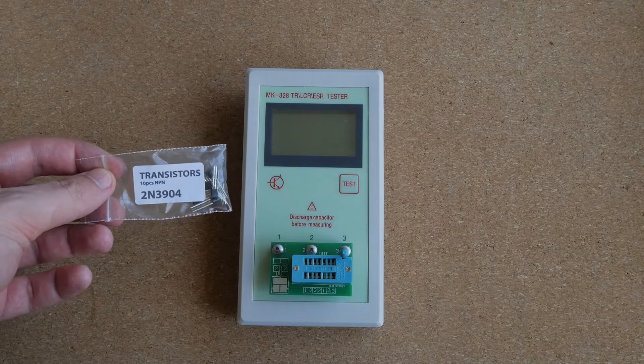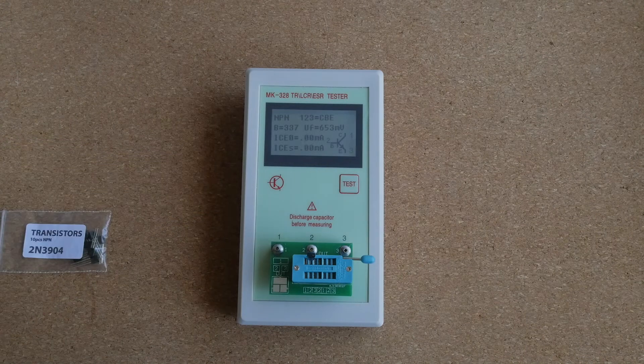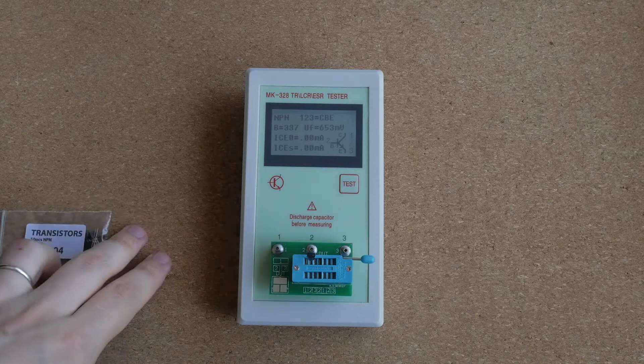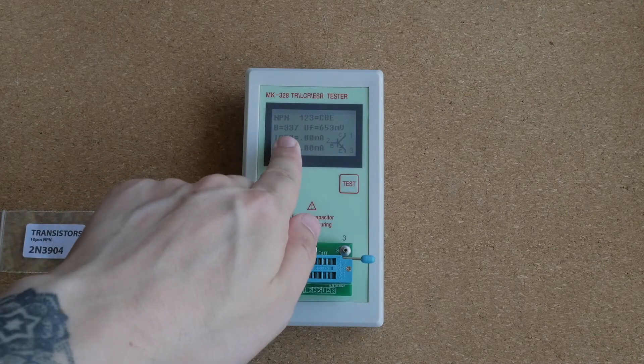This is a 2N3904. As you can see it correctly detected the pinout. It also shows that our DC current gain is 337.